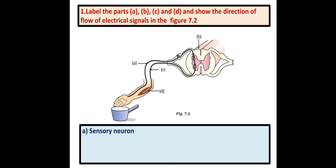A is the sensory neuron, which takes the electrical impulses or signals from the sense organs to the spinal cord. B is the spinal cord. C is the motor neuron, which brings the messages to the effector organs. D is the muscle.